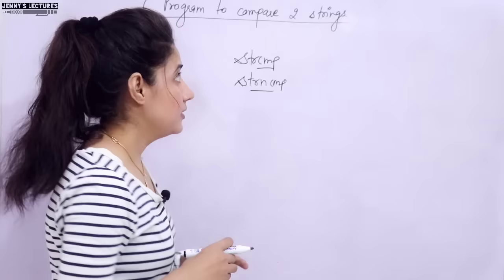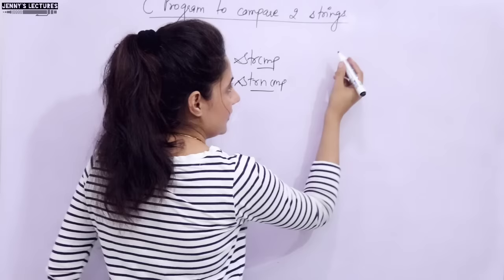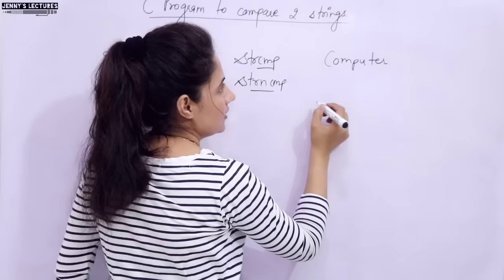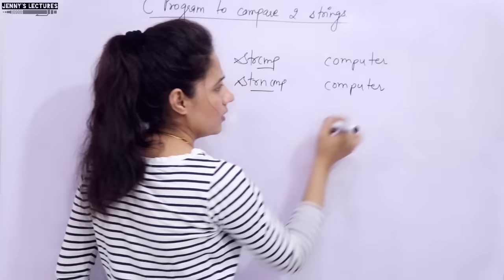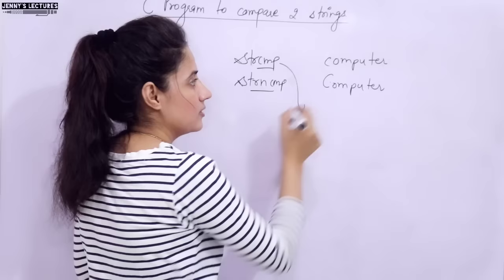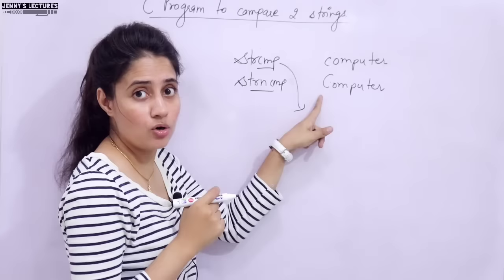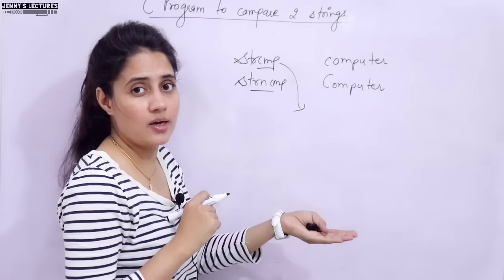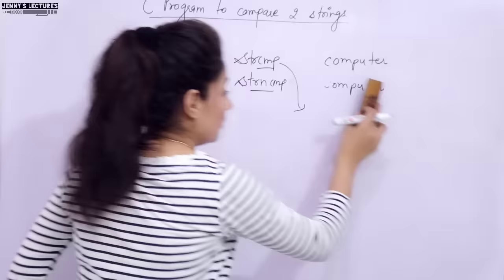Now, how strings have to be compared. Let's say I am taking two strings — one is 'computer' in small letters and another is also 'computer'. Both are the same, so strcmp should return that both strings are equal. If they are not equal — suppose one has a capital C and the other has a small c — obviously these strings are not equal. String comparison works character by character.